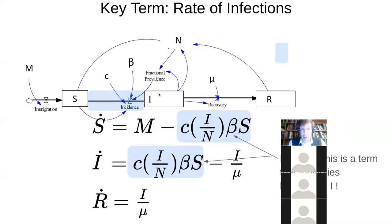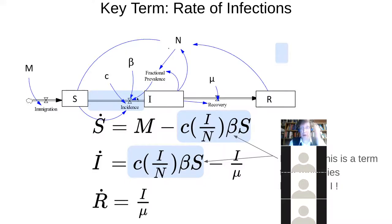The key term here that's different from first-order delays is that it has both S and I. A first-order delay only depended linearly on the value of the stock out of which it flowed. Here we have this multiplication of S and I, and that makes all the difference. There's no one flowing here if there's no S's; there's no one flowing here if there's no I's. The probability of leaving S depends on some other state variable. It's actually the hazard rate — probability per unit time of going here — which depends on another state variable I.